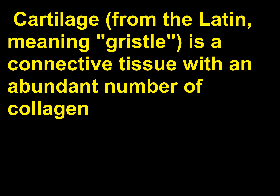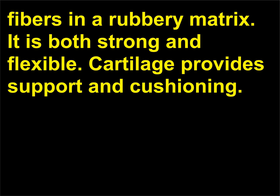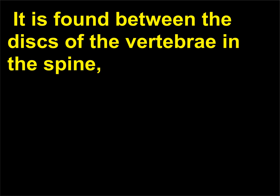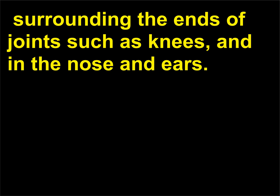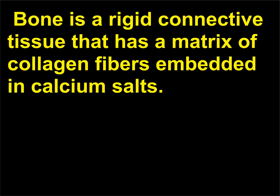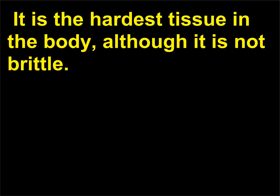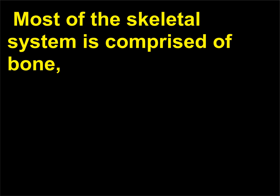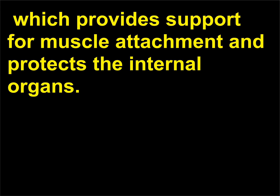Cartilage, from the Latin meaning gristle, is a connective tissue with an abundant number of collagen fibers in a rubbery matrix. It is both strong and flexible. Cartilage provides support and cushioning. It is found between the discs of the vertebrae in the spine, surrounding the ends of joints such as knees, and in the nose and ears. Bone is a rigid connective tissue that has a matrix of collagen fibers embedded in calcium salts. It is the hardest tissue in the body, although it is not brittle. Most of the skeletal system is comprised of bone, which provides support for muscle attachment and protects the internal organs.